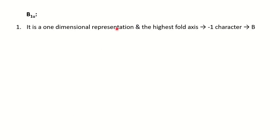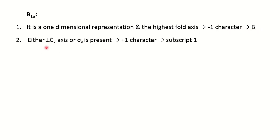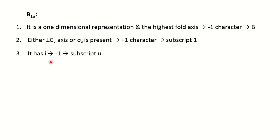Similarly for B1u: it is one-dimensional representation; the highest fold axis has minus one character, therefore the symbol is B. Either perpendicular C2 axis or sigma v with plus one character gives subscript 1. Finally, g and u classification is given for the center of symmetry — the character must be minus one to get subscript u. So the molecule is having a center of symmetry with minus one character for inversion.